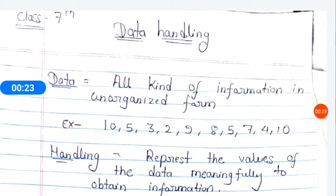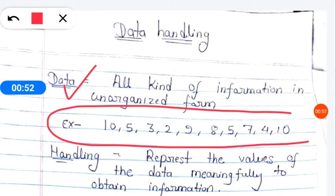So let's understand data handling. What is data? Basically, data is all kinds of information in unorganized form. So if we have some values or data given that has no meaning, we call it data. We cannot collect any information from it. For example, some numbers are given on screen, so simply they are given but we cannot collect any information from it.